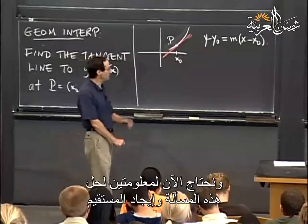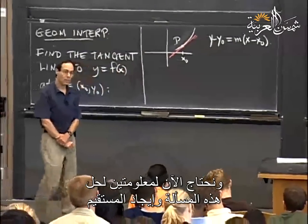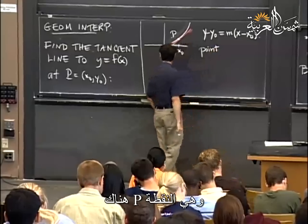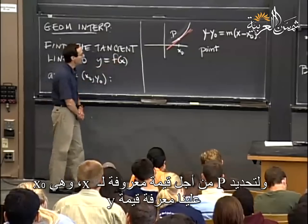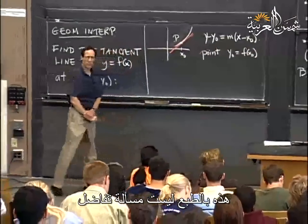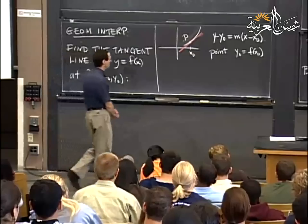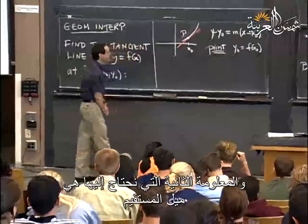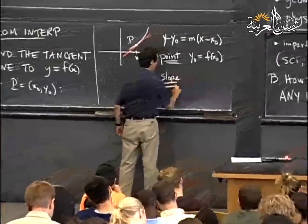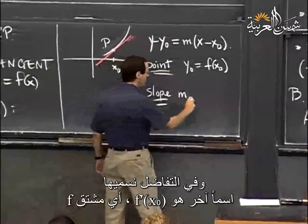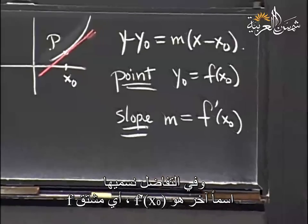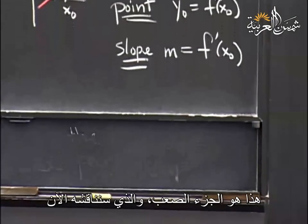There are two pieces of information needed to work out what the line is. The first is the point P itself: given x₀, we need the level of y, which is just f(x₀) — that's not a calculus problem. The second thing we need is the slope, which is the number m. In calculus, we call this f prime of x₀, the derivative of f.